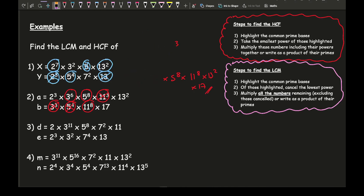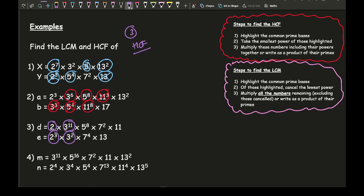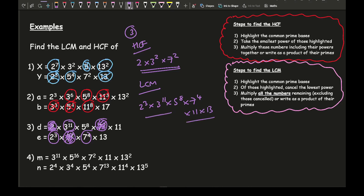Moving on to question three. For the HCF, highlight the common bases: I've got twos, threes, and sevens in both — no fives. For the HCF, take the smallest power: that's 2¹ × 3² × 7². Then for the LCM, remove the smallest power of each highlighted base, and the LCM is 2³ × 3¹¹ × 5⁸ × 7⁴ × 11 × 13.